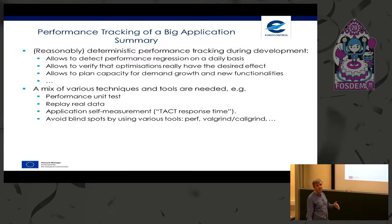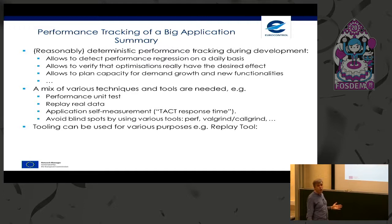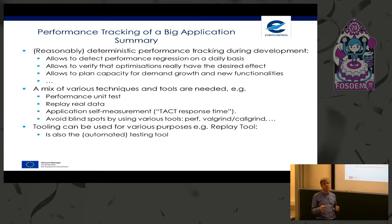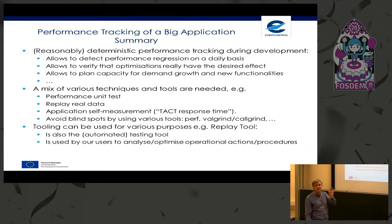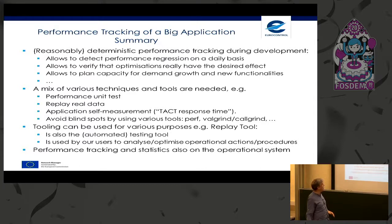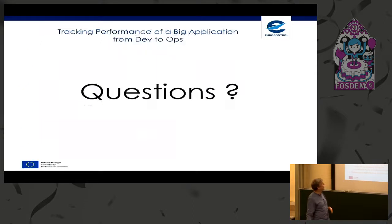Performance tracking of a big application — a summary. We have reasonably deterministic performance tracking during development allowing daily detection of performance regression. We can verify that our optimizations have the desired effect and plan capacity upgrades. We use a mix of techniques: performance unit tests, replay of real data, and application self-measurement. We have to take care to avoid blind spots by using various tools. The replay tool also serves as an automatic testing tool and is used by our users to analyze and optimize operational actions. Your operational system needs performance tracking and statistics — this is not only for development.